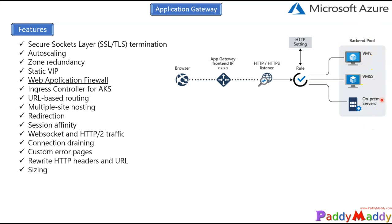For redirection, if a user is browsing on HTTP, which may not be secure, you can configure Application Gateway to automatically redirect to HTTPS so that all communication is secured. That is one of the key options for the redirection feature.